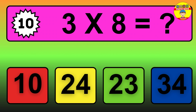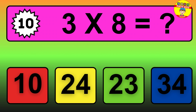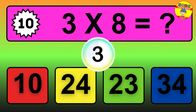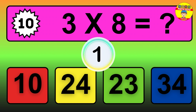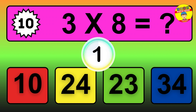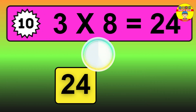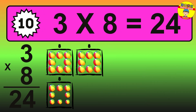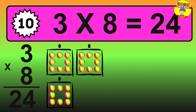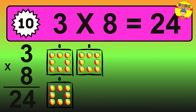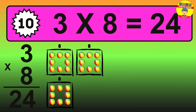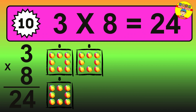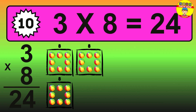Question 10. 3 times 8 equals what? The answer is 3 times 8 is 24. To calculate, we have 3 groups with 8 balls each one. So how many balls do we have? That's 24 balls.